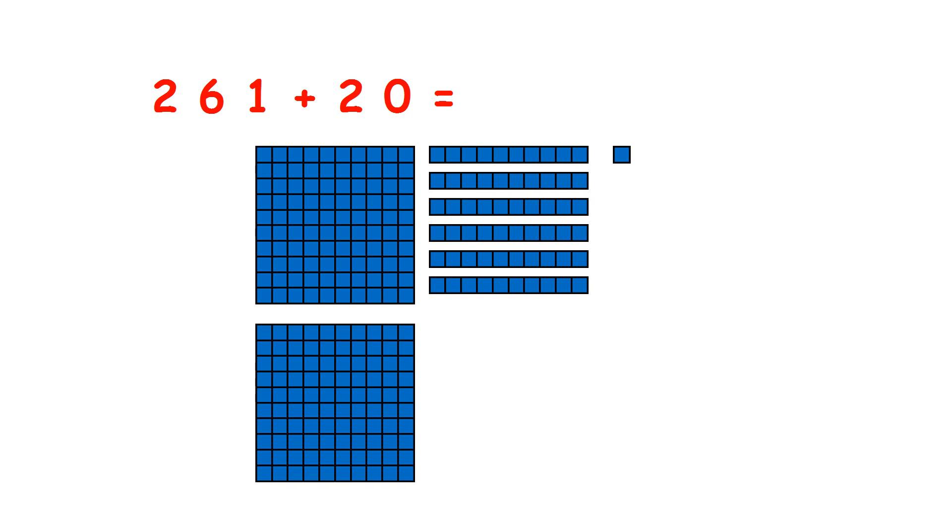So what is 261 plus 20? Well, we have six tens and we're adding two tens, so if we add one, two tens, we now have 281, because six plus two is eight, so we have eight tens.